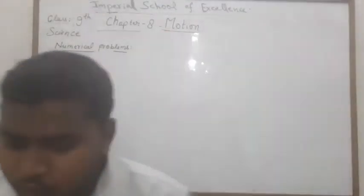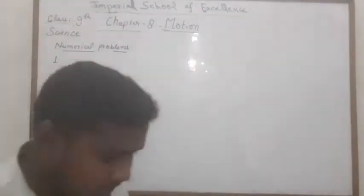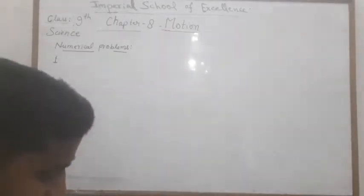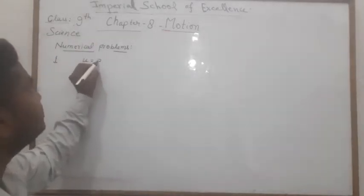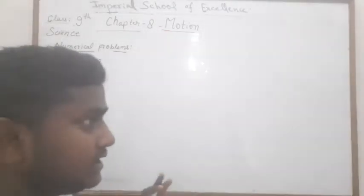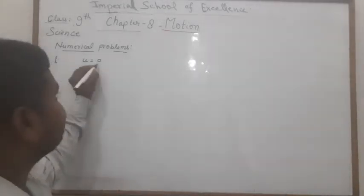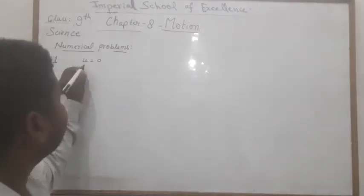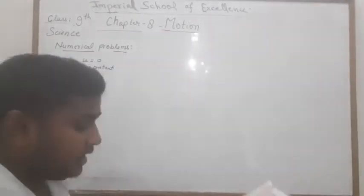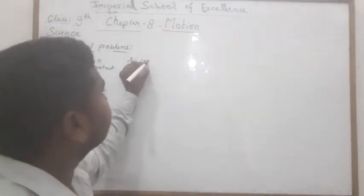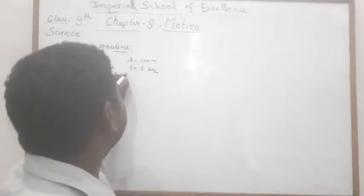Now let's solve some numericals. First question: A body starts from rest with uniform acceleration. Body rest में start करता है, means initial speed u = 0. It travels 100 meters in 5 seconds. What is the value of acceleration? So here we have s = 100 m, t = 5 s, u = 0, and we need to find a.